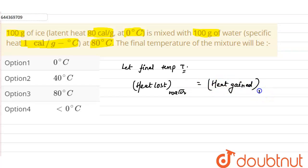Now the heat lost by water will be given as ms∆T, and heat gained by the ice will be mL + ms∆T.